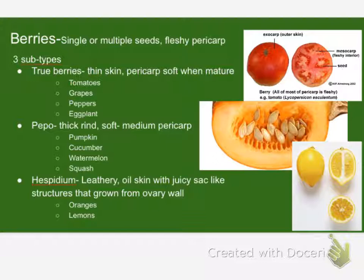Now let's break berries down a little bit, because there are true berries. These have a very thin skin — like a tomato, like a grape. And when they're mature, the whole pericarp is all soft. You can bite right through it. Tomatoes, grapes.